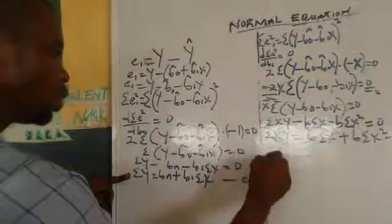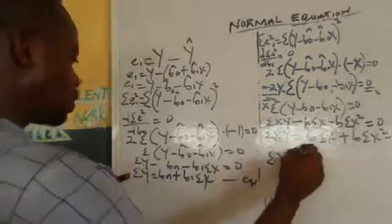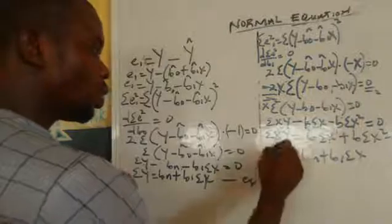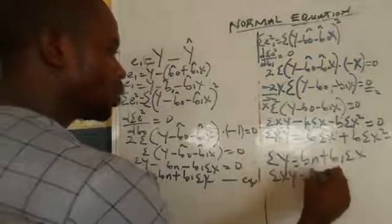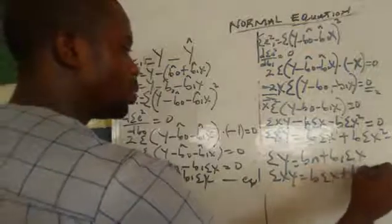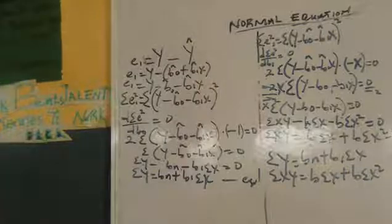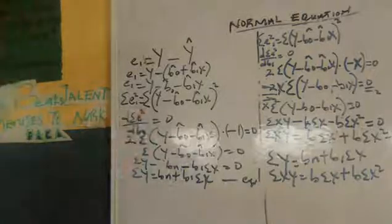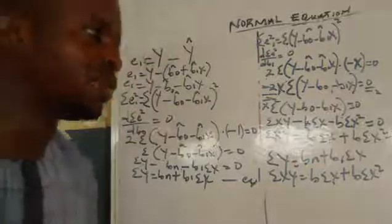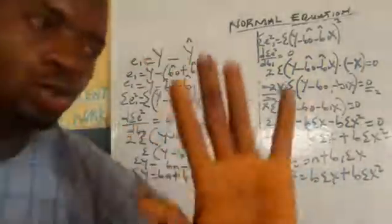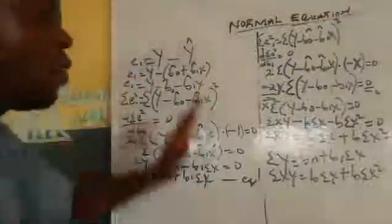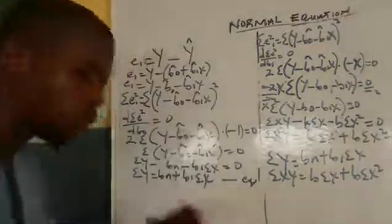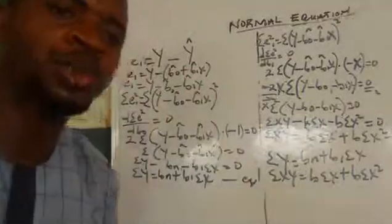So our two normal equations are: equation one — summation Y equals B0·n plus B1·summation X, and equation two — summation XY equals B0·summation X plus B1·summation X squared. From here we can derive the least square estimates, which will be covered in the next video. To really get this, try it four or five times on your own — if you make a mistake, cancel and start over, and you'll definitely get it before your exam. Please subscribe for more videos.